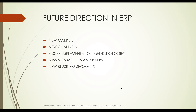The second future direction is new channels. Vendors are being forced to market their products to small businesses, making software more affordable by lowering prices for each module and basing the total cost on user licenses. For example, Oracle offers lower-priced software from companies such as Platinum Software and Great Plains Software. Another example is JD Edwards, which provides less expensive versions of its OneWorld suite.